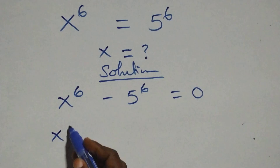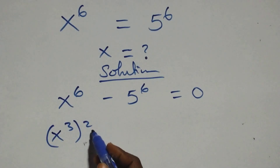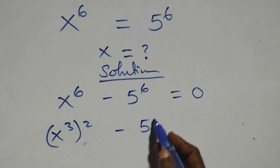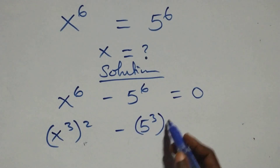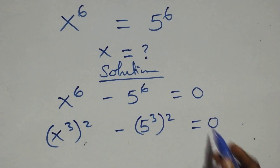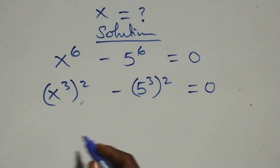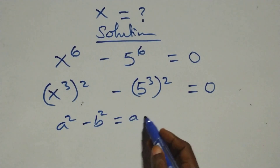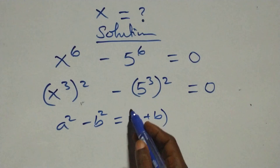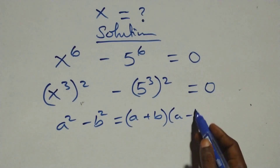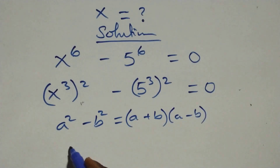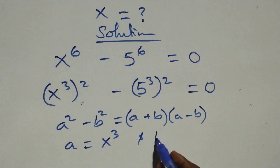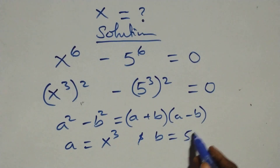We can write this as x raised to power 3, squared, which is 3 times 2 equals 6, minus also 5 raised to power 3, squared, equals to 0. Then this follows: we have a squared minus b squared, which equals a plus b into bracket a minus b, where a is the same as x raised to power 3 and b is the same as 5 raised to power 3.